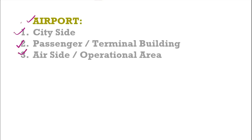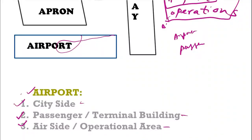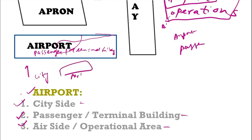Let us start with the passenger or terminal building. Let us assume this blue color dot is the terminal building, where passengers will be coming to the airport. The passenger will be coming from the city — here is a parking area and this is the approach to the airport — and then he will be coming here.